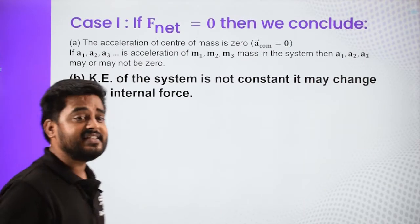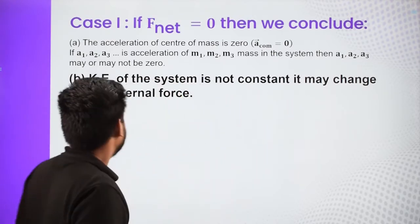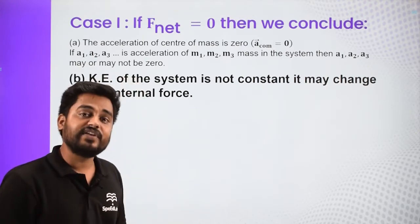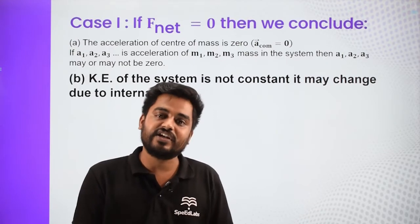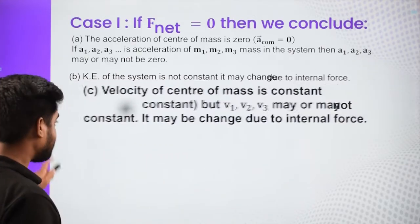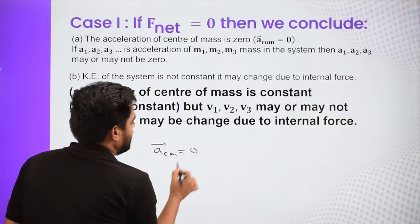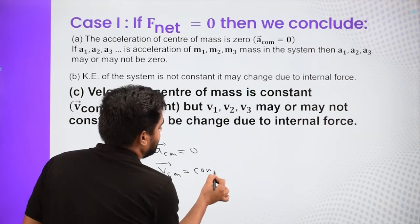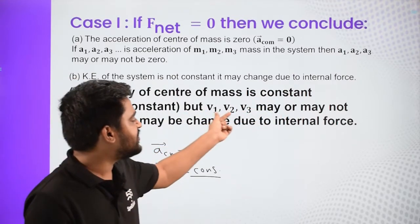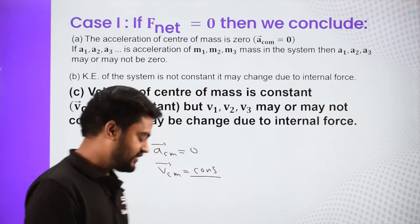If the accelerations of individual particles are non-zero, then their velocity will change. So we will say the kinetic energy of the system is not constant — it may change due to internal forces. If internal forces are acting, individual particles will experience acceleration, their velocity will increase or decrease, and hence kinetic energy of the system might or might not be constant. Regarding velocity: when acceleration of center of mass is zero, the velocity of center of mass is constant, but that does not imply that individual velocities are constant. Individual velocities V1, V2 may change due to internal forces.